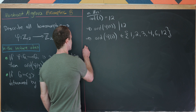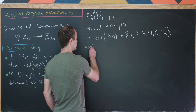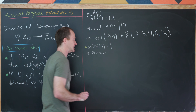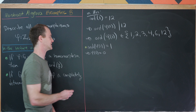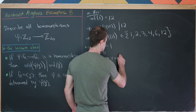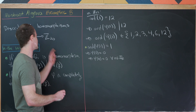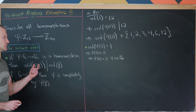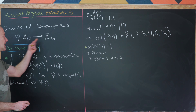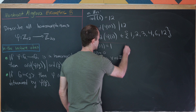Let's look at the first case where the order of φ(1) equals 1. In that case, φ(1) = 0. But 1 is the generator of Z12, so that means φ(n) = 0 for all n in Z12. So we have the trivial homomorphism between Z12 and Z20 — in fact between any group and Z20 — where we send every element to zero.